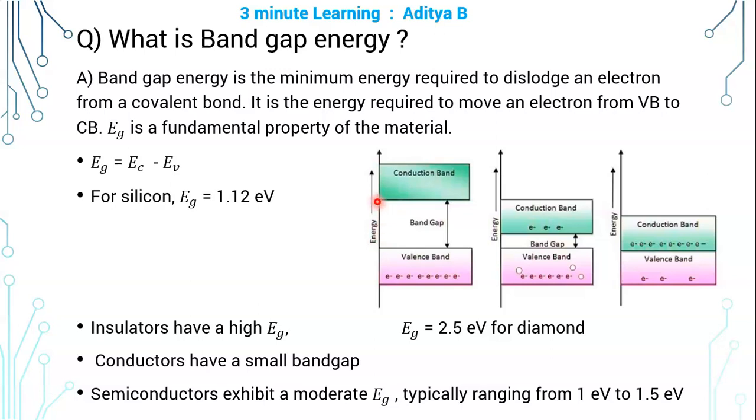EC is the edge of the conduction band. EV is the edge of the valence band. This difference is the band gap. For silicon, energy band gap is around 1.12 electron volt.